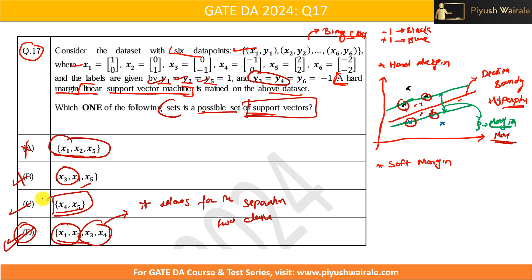So option D is the correct answer. Option A is directly cancelled, option B lacks participation of both classes, option C is possible but with only one point from each class it may not provide adequate information to define the boundary. Option D, with equal contribution from both classes, is the most accurate and is the correct answer.